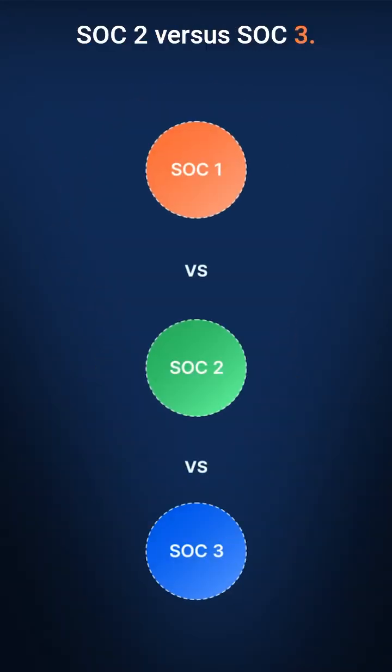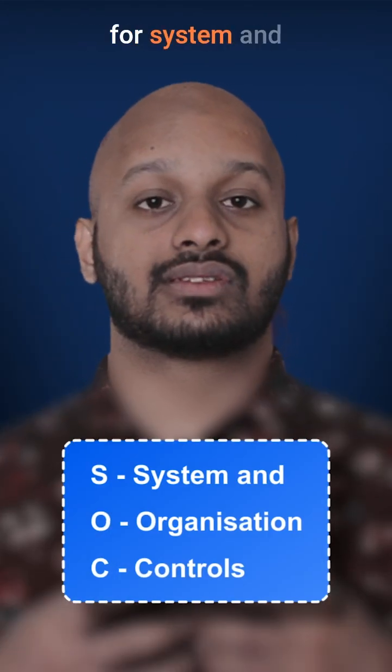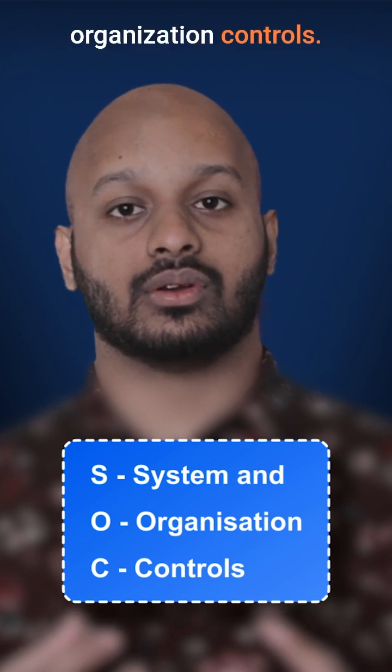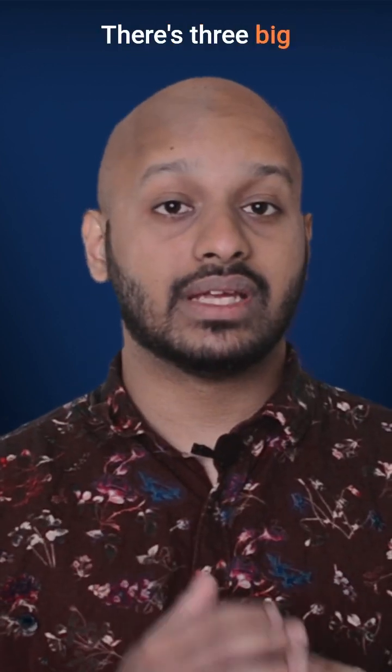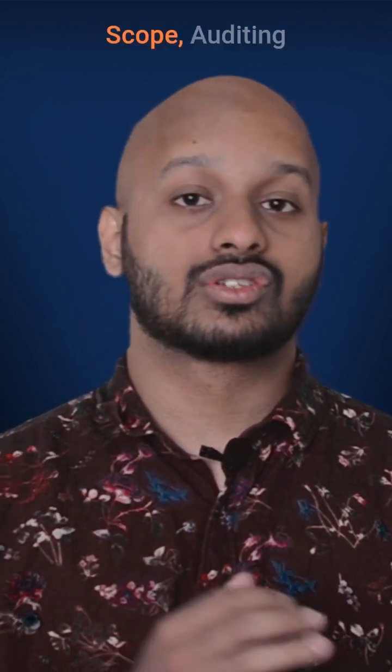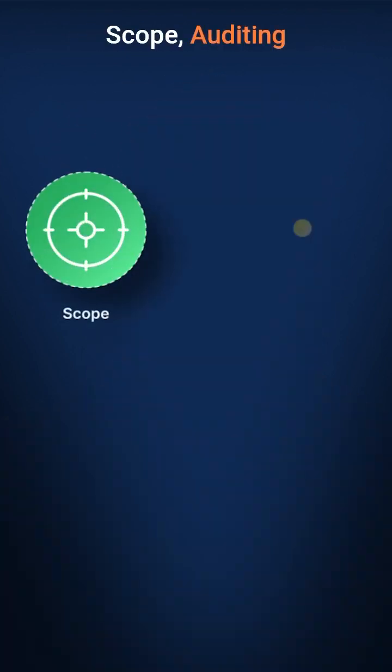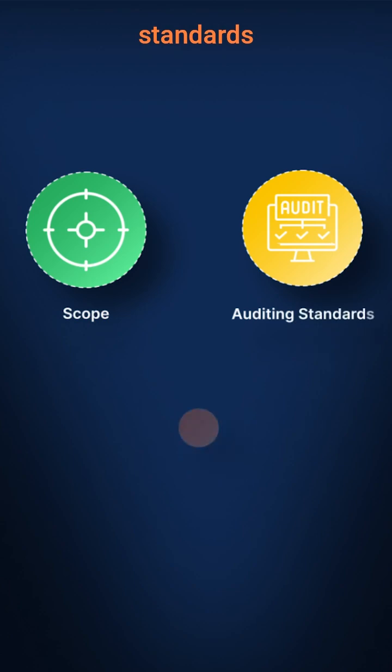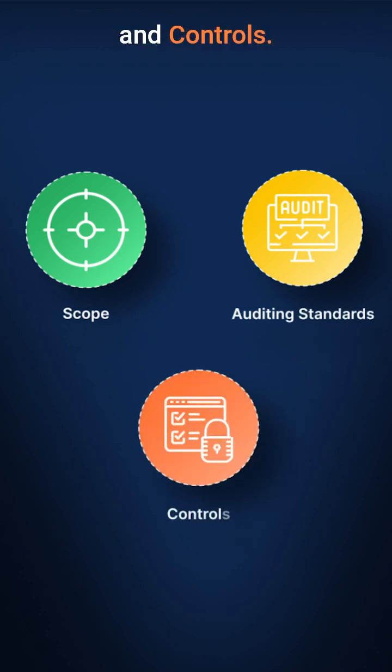It makes sense that you have questions about SOC 1 vs SOC 2 vs SOC 3. SOC stands for System and Organization Controls. There are three big differences between SOC 1 and SOC 2: scope, auditing standards, and controls.